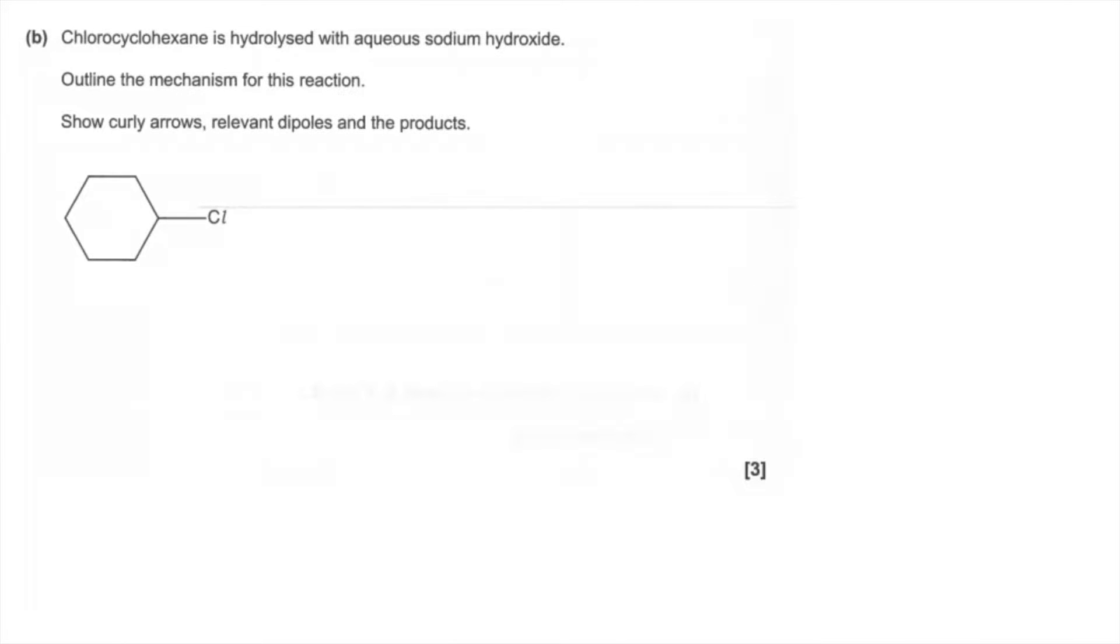Part B now, so the mechanism. So we've got to outline the mechanism for the reaction with aqueous sodium hydroxide. We're only interested in the hydroxide ion, so the Na plus ion won't feature in this mechanism. I've got to show curly arrows, the dipoles and the products. So the first part of the mechanism.